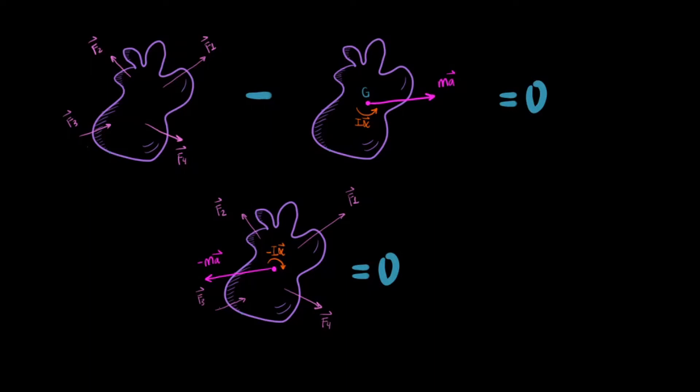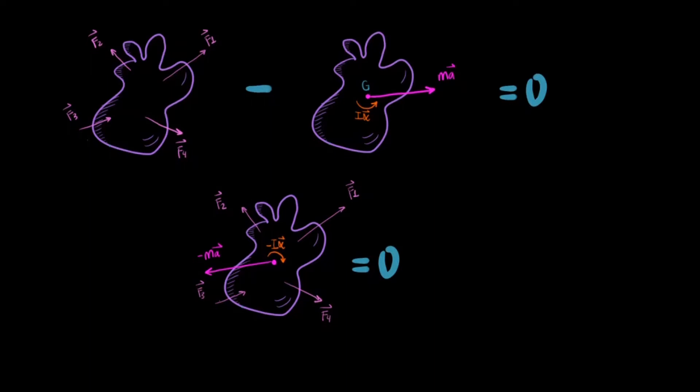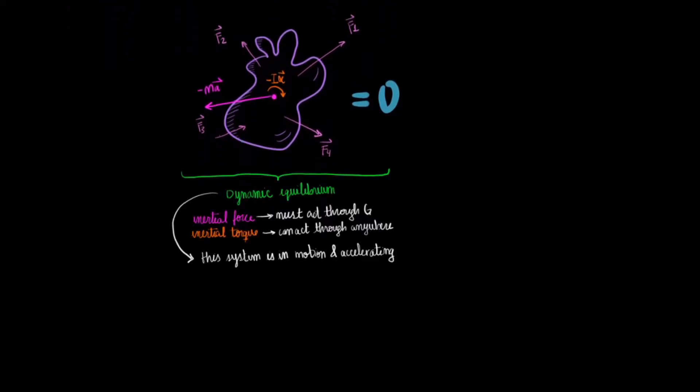Although the body is accelerating and rotating, the sum of everything is zero. This is what we call dynamic equilibrium.